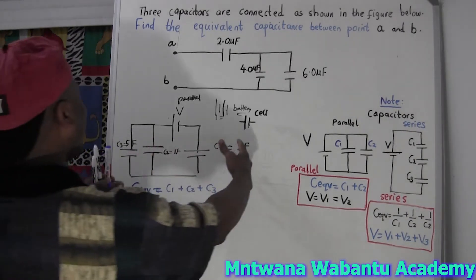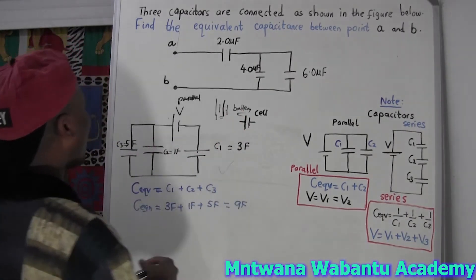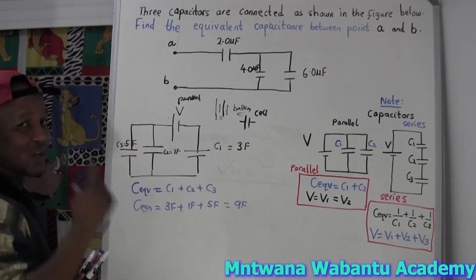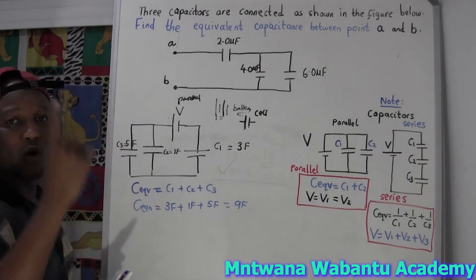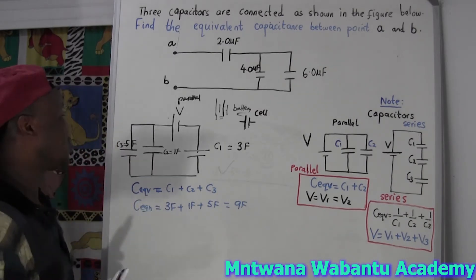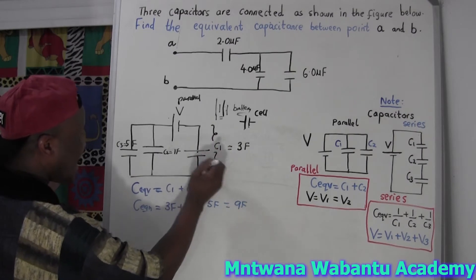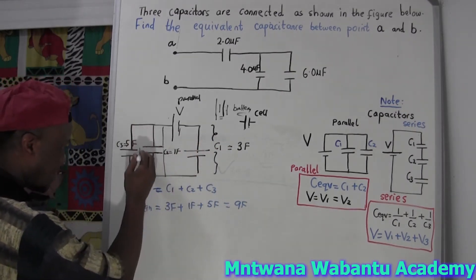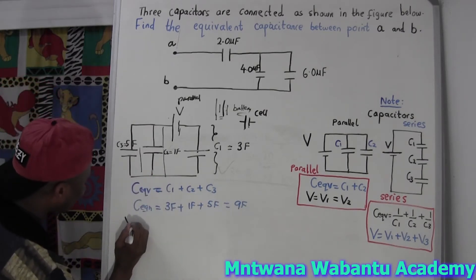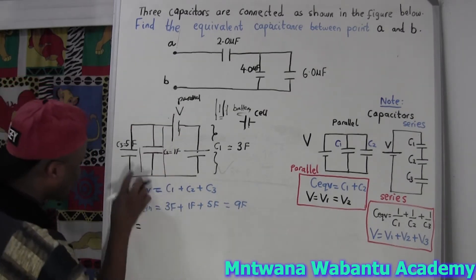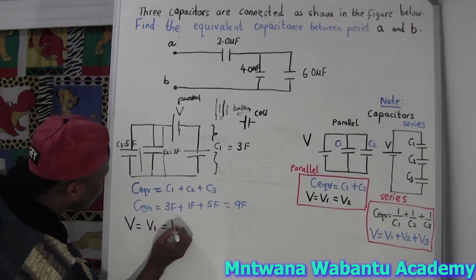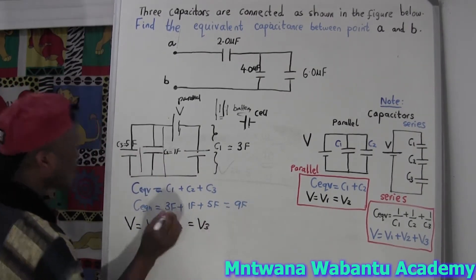Now what about potential difference when capacitors are in parallel? When they're in parallel, they all share a single potential difference. So the PD across capacitor one equals the PD across capacitor two, which equals the PD across capacitor three. V1 = V2 = V3 — that's how potential difference works for parallel capacitors.